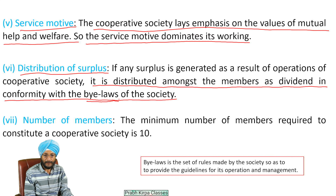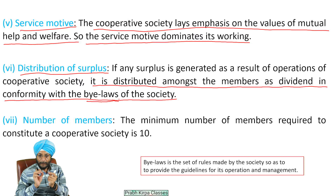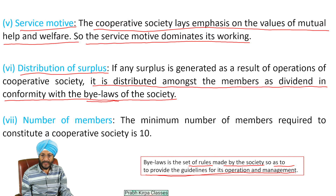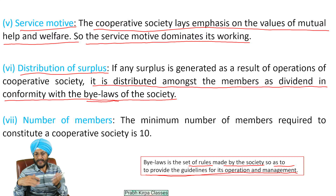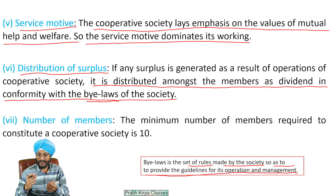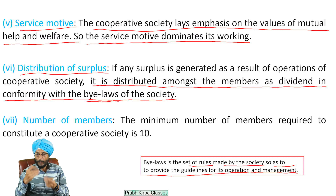What is the meaning of bylaws? Bylaws means a set of rules made by the society so as to provide the guidelines for its operations and management. It is not that the elected management committee may do anything — it has to perform as per the bylaws framed by the society. So bylaws is the set of rules made by the society so that the operations and management of the cooperative society are run properly.